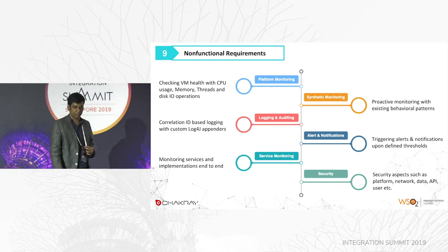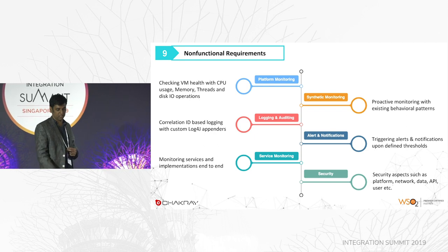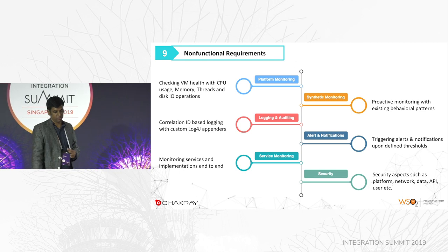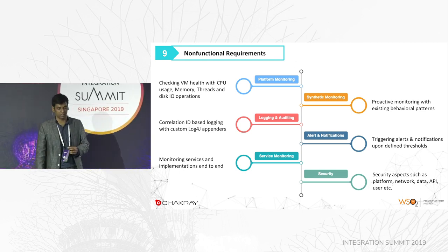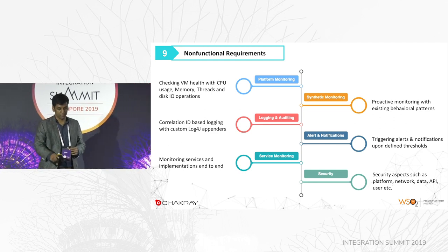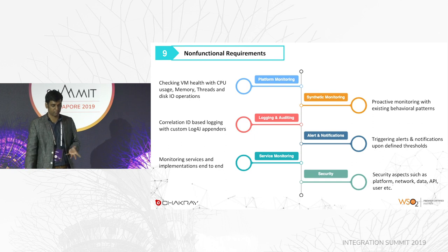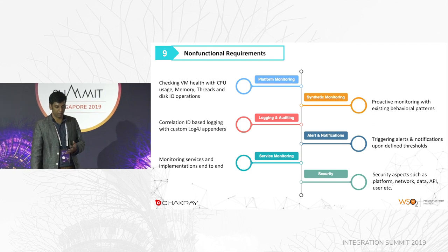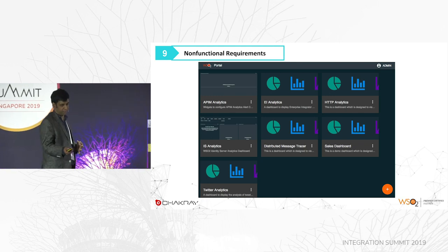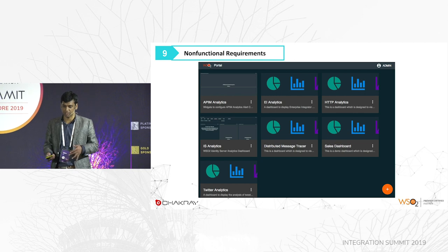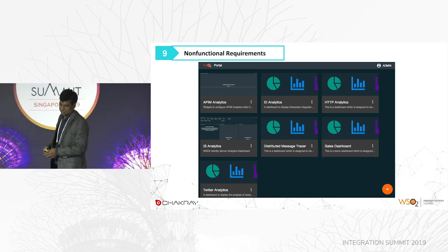Alert and notification also comes into the picture — alerting users via SMS and email. Security is also essential, covering platform, network, data, API, and user security — most of which is covered through WSO2 products, Identity Server and API Manager. For data security specifically, you need to enable the WSO2 Secure Vault. Higher availability and other non-functional aspects will be covered in the infrastructure setup.